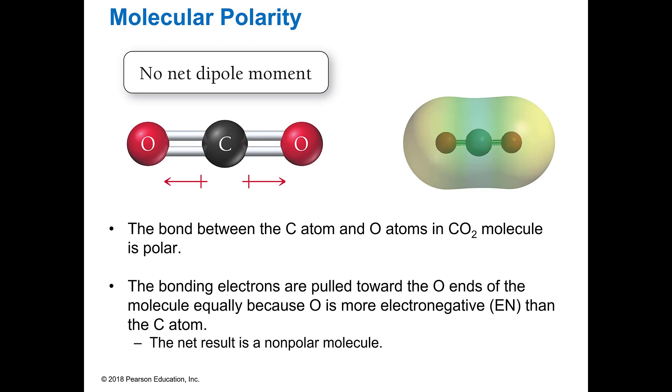Now if you look at carbon dioxide, the bonds between carbon and oxygen are polar because oxygen is more electronegative than carbon. But since they're both going opposite directions and they're equal in distance, they cancel each other out. So this one would not be polar. The other clue is it's linear.